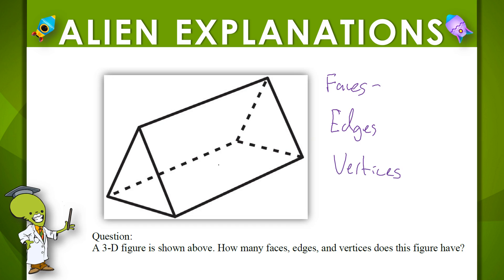Well the faces are the 2D shapes that go all the way around this. So I see that I have two triangular faces, one in the front and one in the back, and then three rectangular faces all the way around. So how many is that? Two triangles plus three rectangles, how many faces would that be?